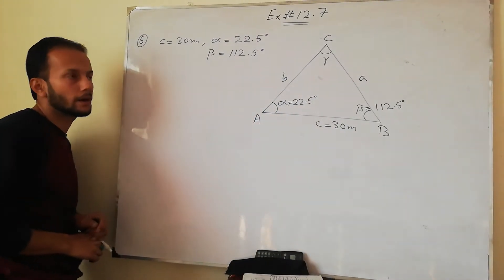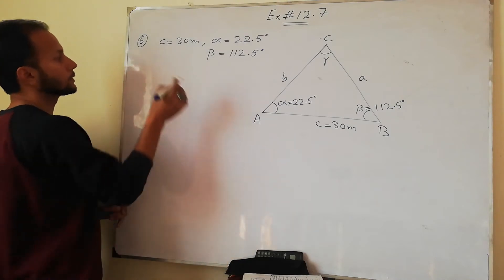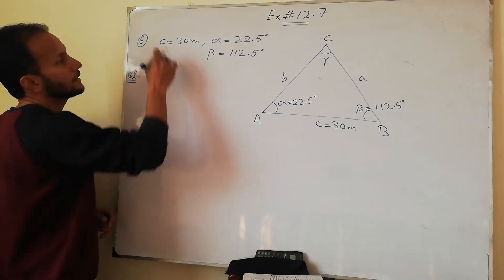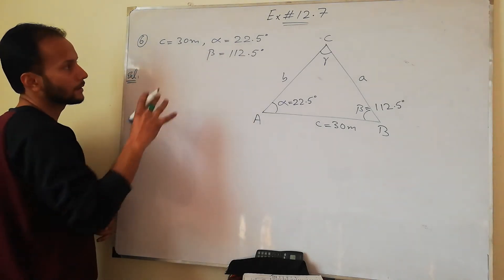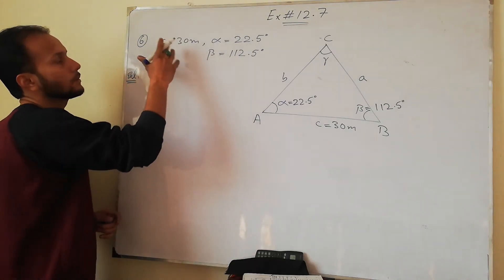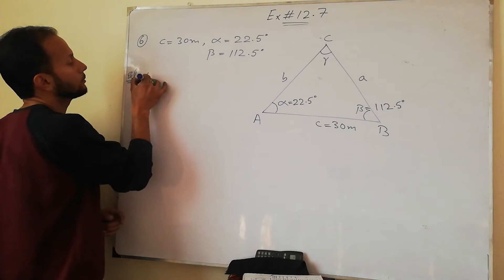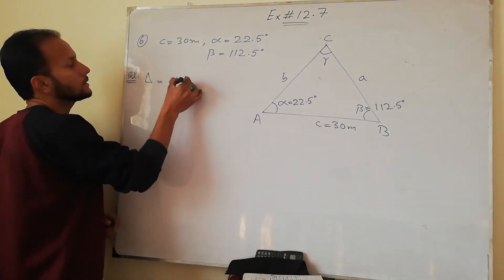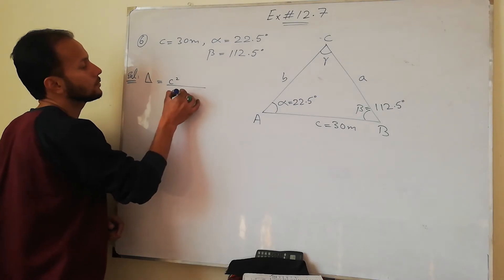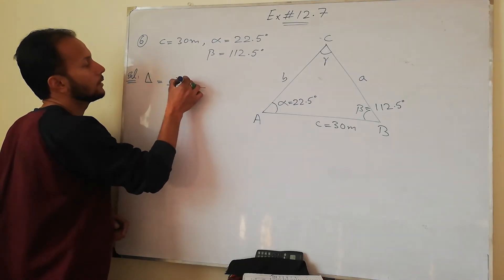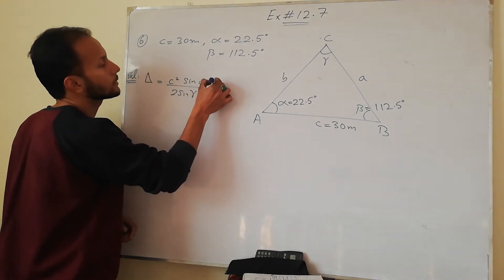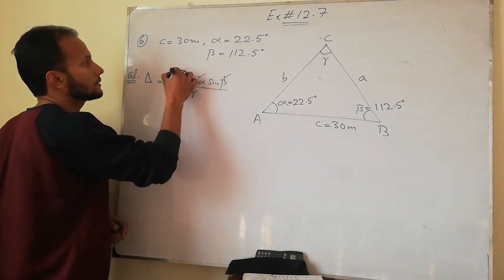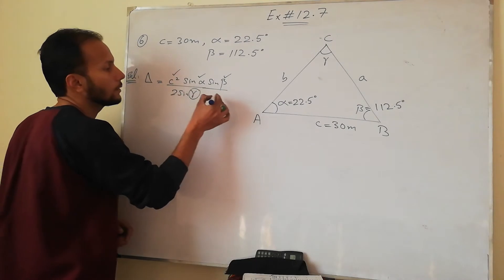So now we have area to find out. According to the given data, we have formula which we use to find out. This is case 2 related data, which has two angles and one side given. So I will find formula: area of the triangle equals to c square divided by two sine of gamma, sine of alpha into sine of beta. Now you can see alpha given, beta given, c side given. It means gamma value to find out.